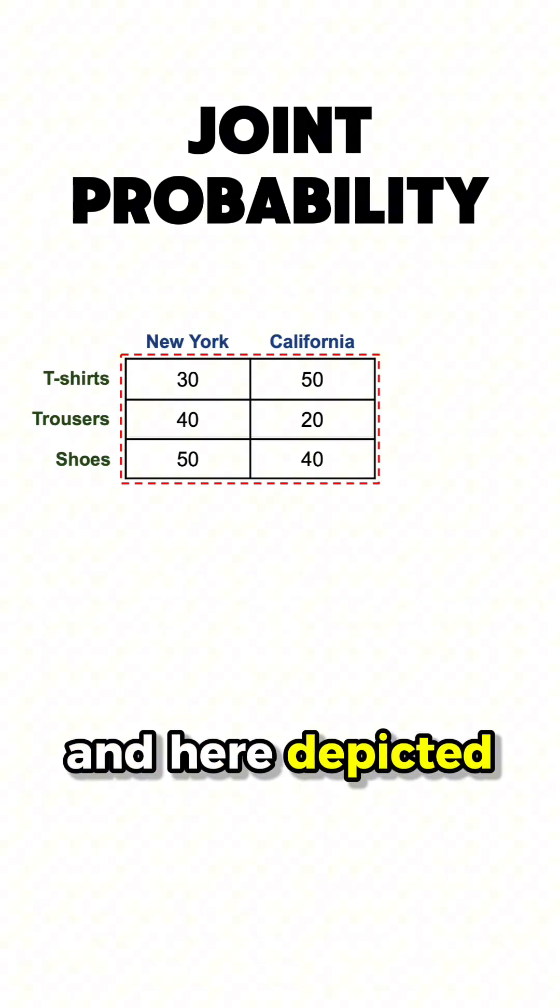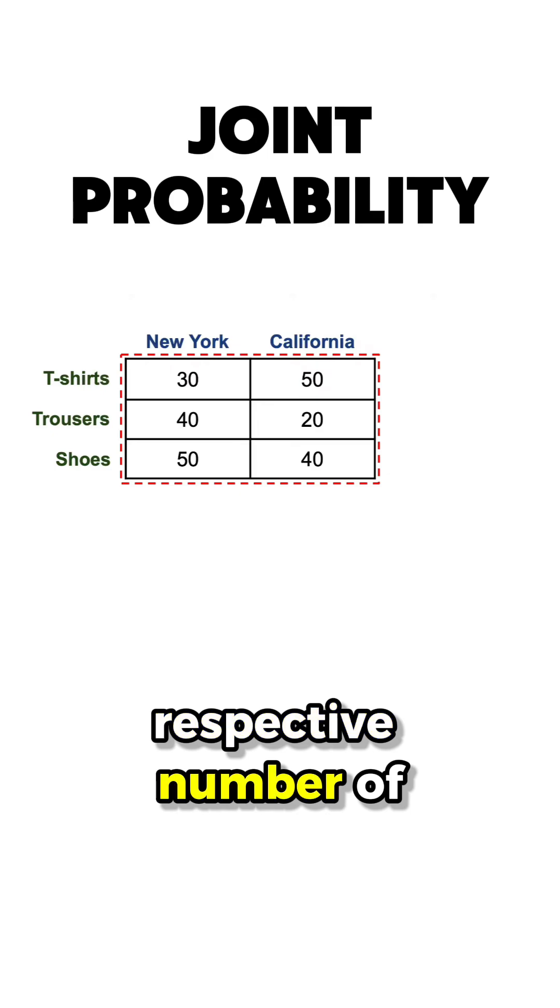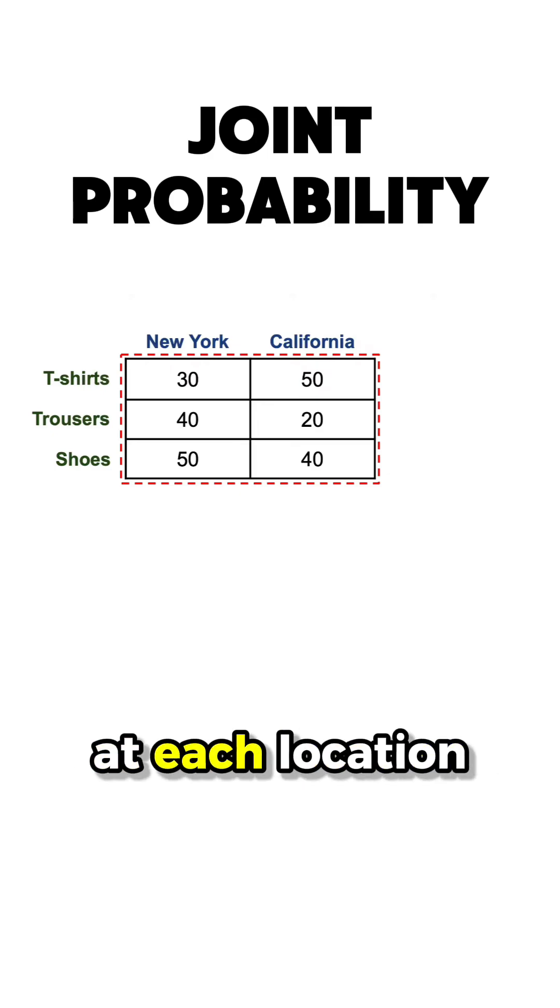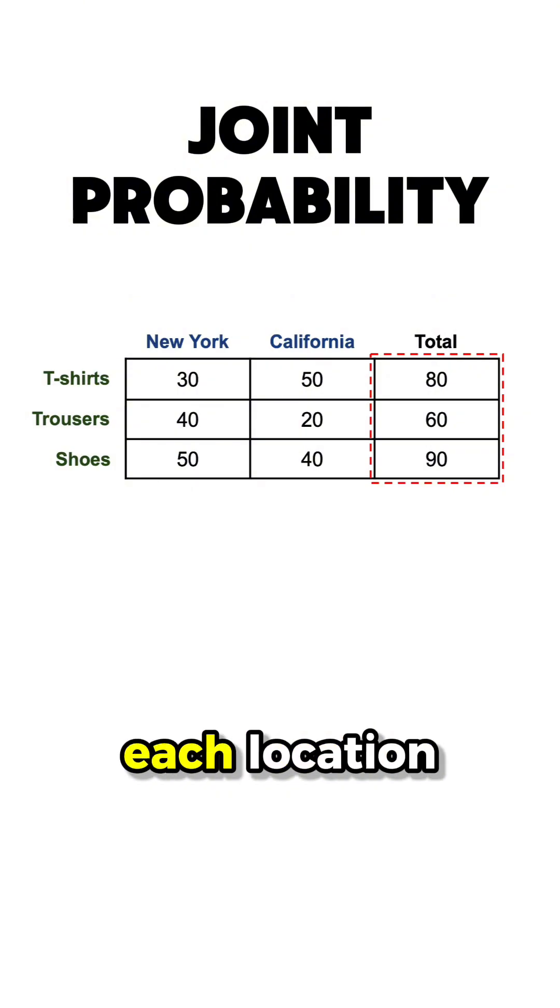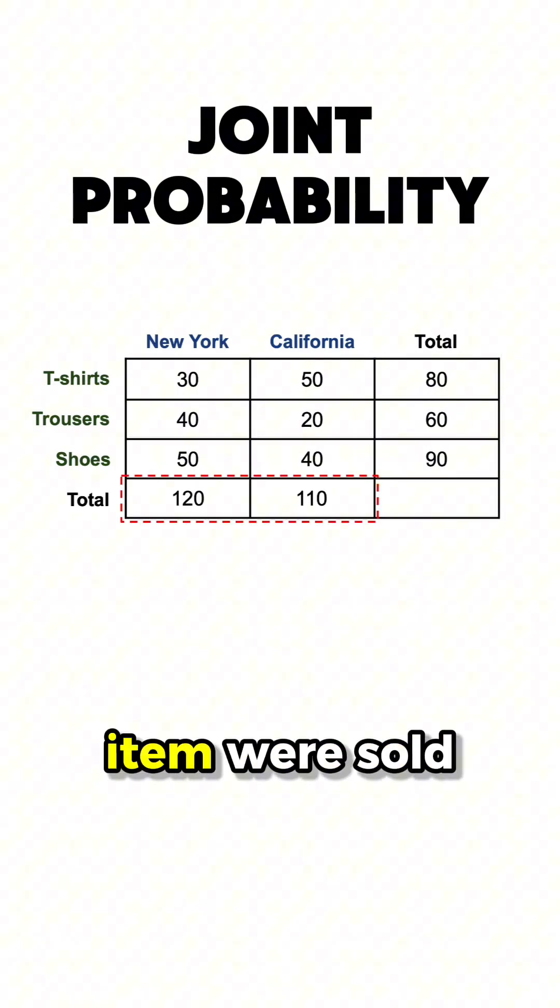And here depicted in the cell of the table, we have the respective number of clothes that were bought at each location. We can further calculate how many clothes were sold at each location and how many units of each item were sold overall, no matter the location.